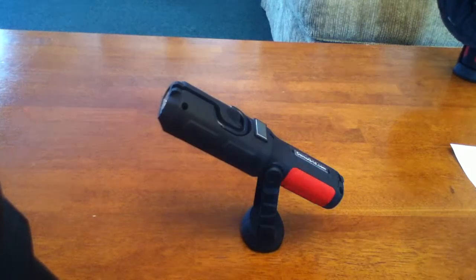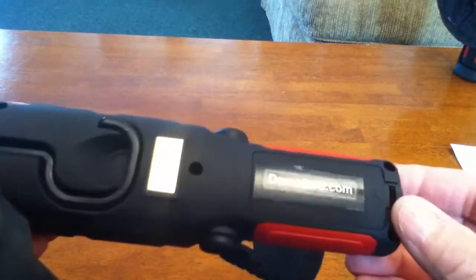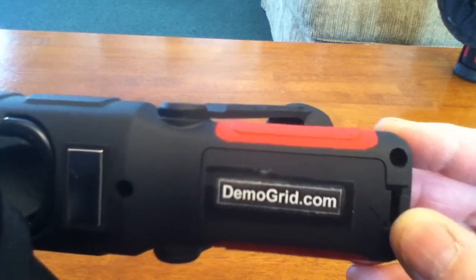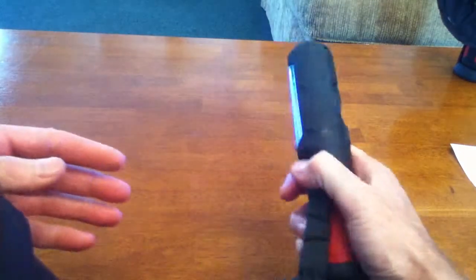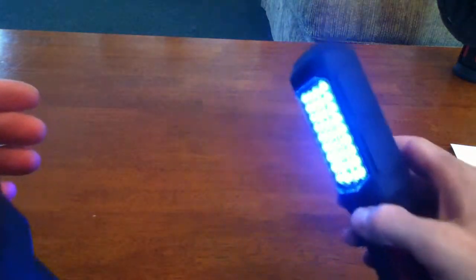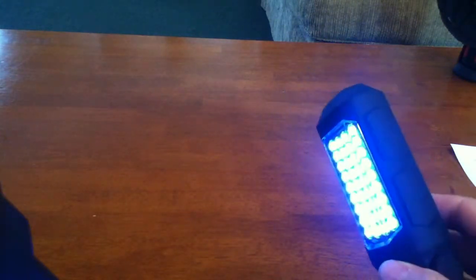This is a multi-function work light that's available from demogrid.com. The light has a 36 LED ultraviolet light bar.